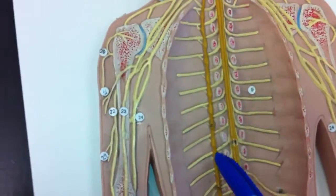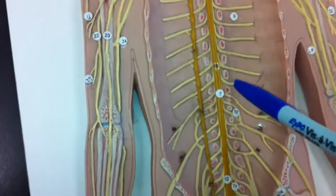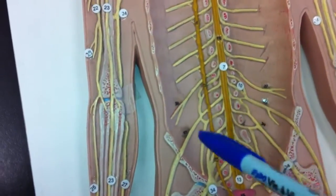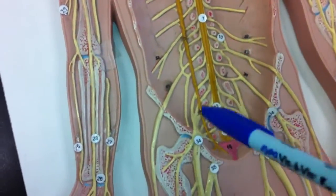We have the thoracic nerves down the front. Here's the lumbar plexus, and here's the sacral plexus.